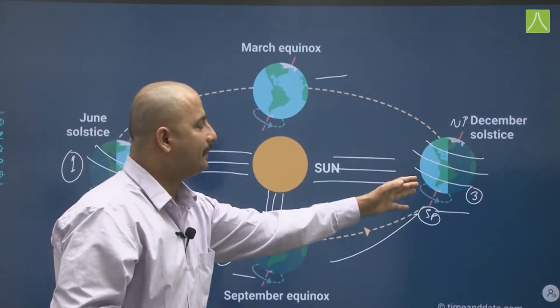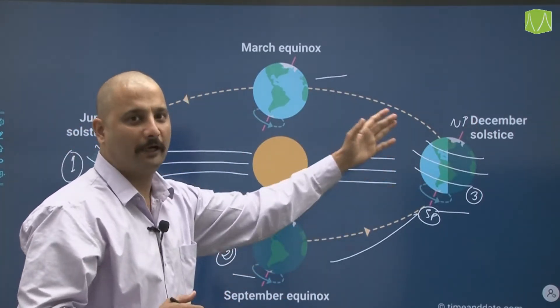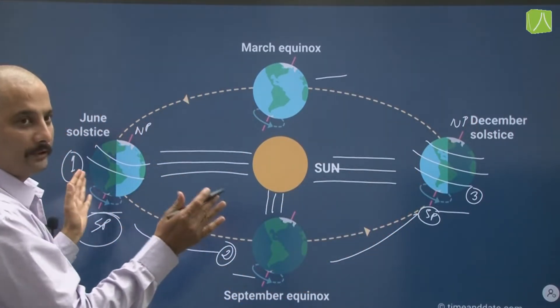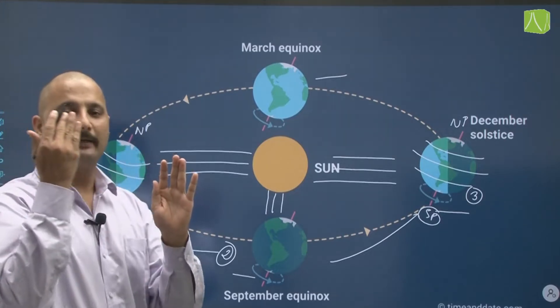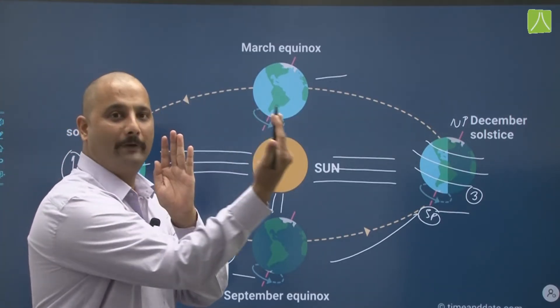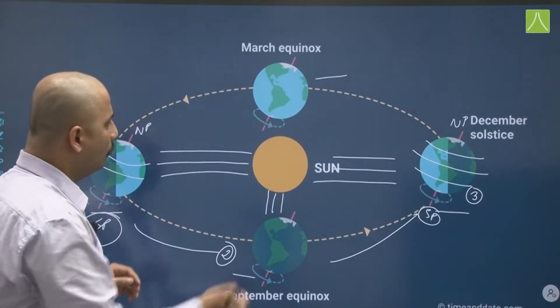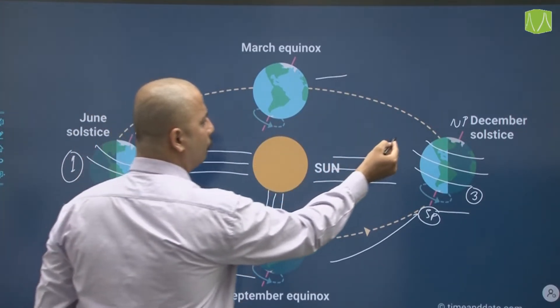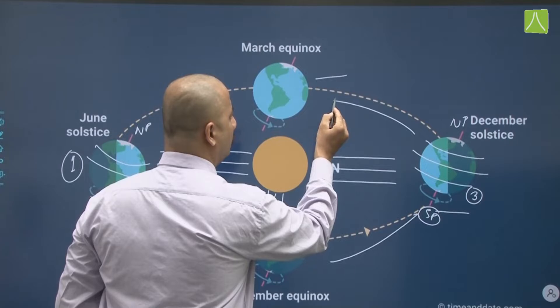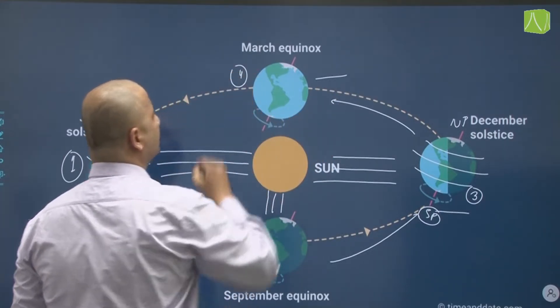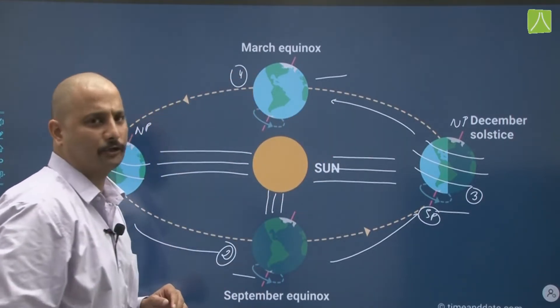In the northern hemisphere at this time it will be winter solstice because it is away from the sun. If you compare the third position and first position, it is just opposite — the earth is moving around like this. We then come back to the fourth position, which is again the equinox that happens in March.